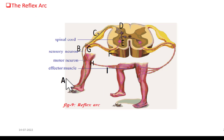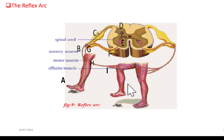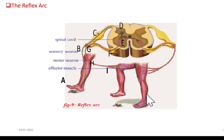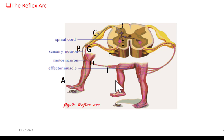Now let us come to the reflex arc. In this picture we find three legs. The first leg at position A is the right leg about to strike a sharp stone; after striking, the leg immediately raises up. The second leg shows the raised position of the right leg. The third leg is the left leg pressing firmly against the ground to balance the body. The first leg is called the detector — it detects the sharp stone, which is the stimulus.